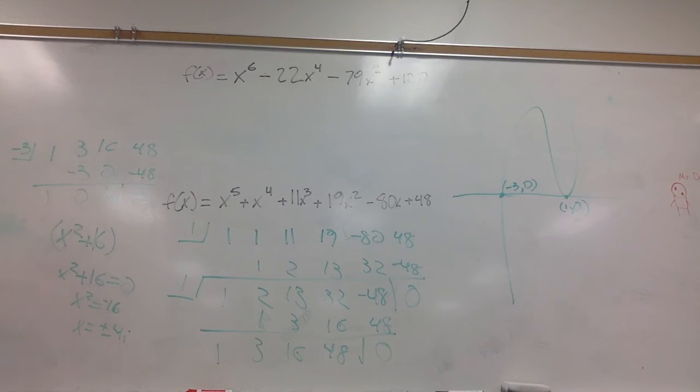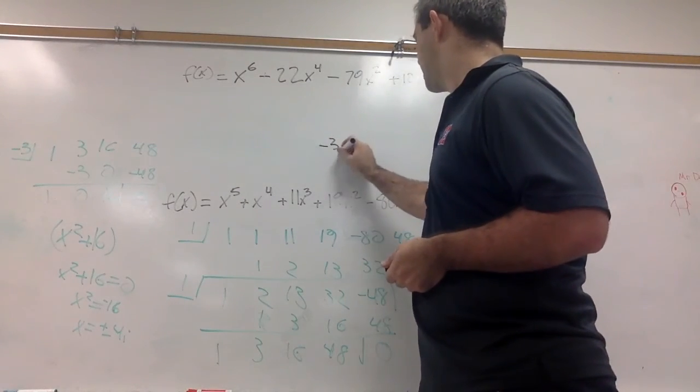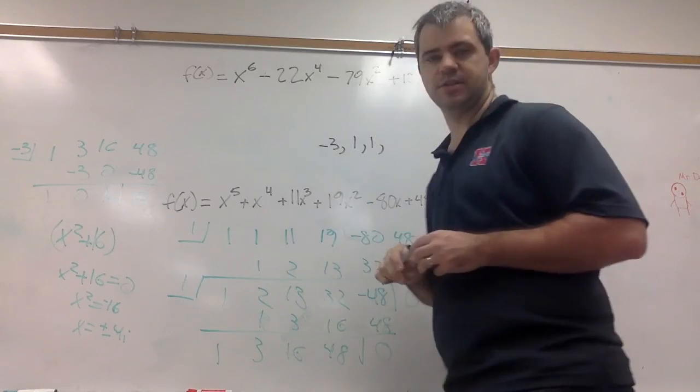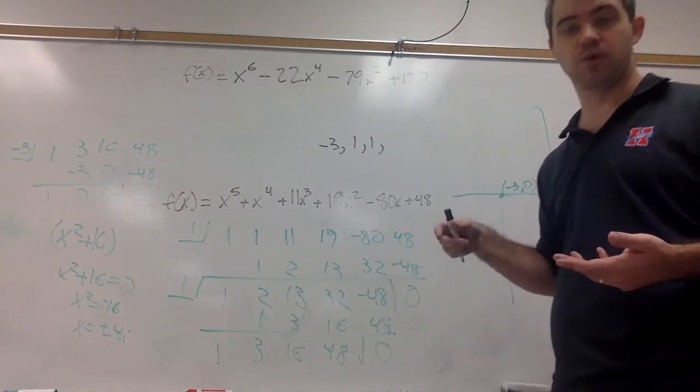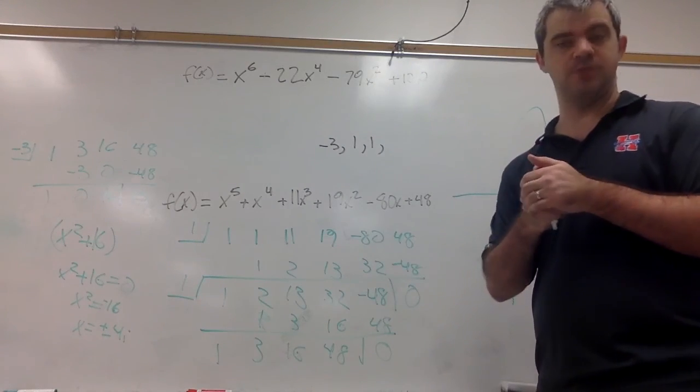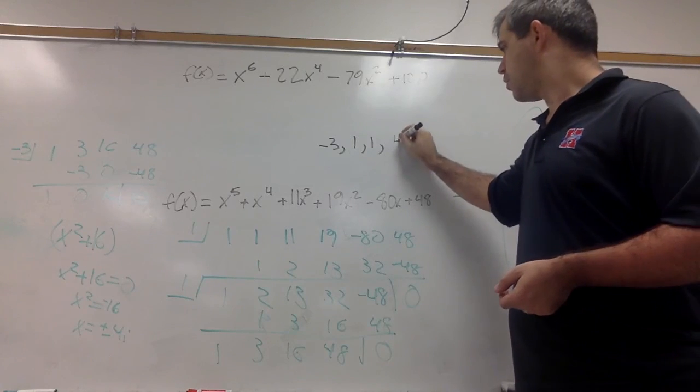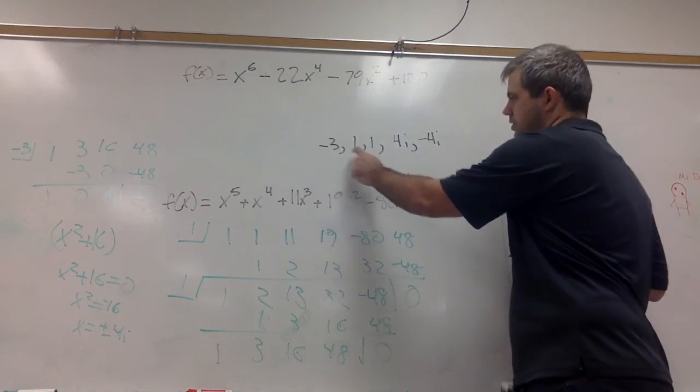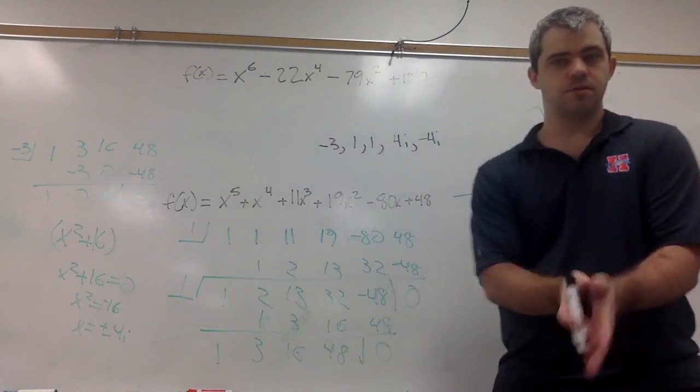Now, so what are my solutions? Or what are my roots? Well, I have negative 3. I have 1 that shows up twice. It does want you to list them out, including their multiplicity. So if it shows up more than once, you put it more than once. So negative 3, 1, 1, 4i, and negative 4i. 1, 2, 3, 4, 5 solutions. Happy days.